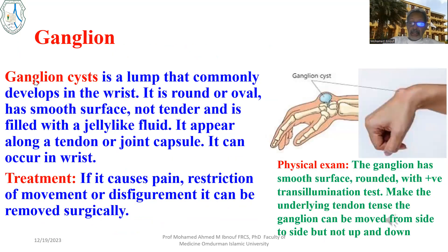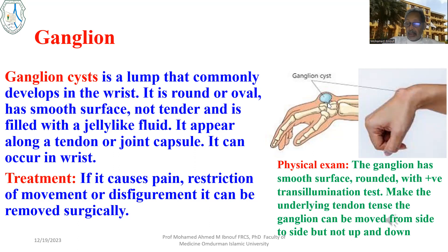One of the commonest swellings in the subcutaneous tissue is a ganglion. The ganglion is a cyst commonly developed in the wrist or along the tendons. It is behind the skin — you can grasp the skin over it. It is rounded or oval, smooth, usually not tender, and filled with jelly-like fluid. Because it is small, it might be difficult to demonstrate a fluctuation test. If it causes pain, restriction of movement, or disfigurement, it can be removed surgically, but it may be connected to the joint capsule.